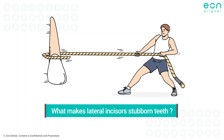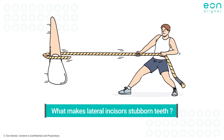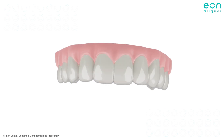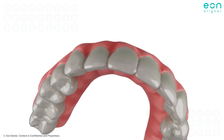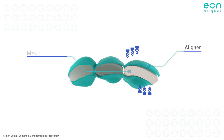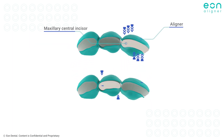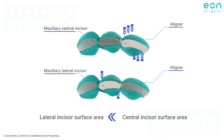So what makes lateral incisors stubborn teeth? One major challenge is simply their smaller size in comparison to the adjacent teeth. Aligners work by wrapping around the teeth and applying gradual push forces to move them into position, so a decreased surface area means simply less force conveyed.